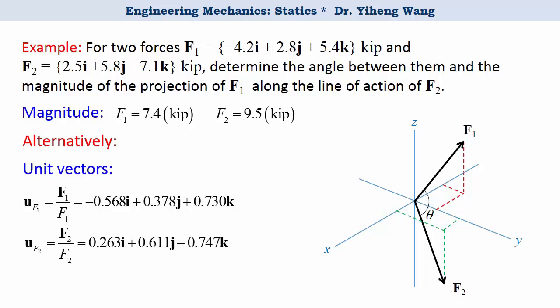Since the angle made by these two unit vectors is the same as the angle made by the original two force vectors, therefore angle theta can be easily determined as inverse cosine of the dot product of these two unit vectors, and you will get the same answer.